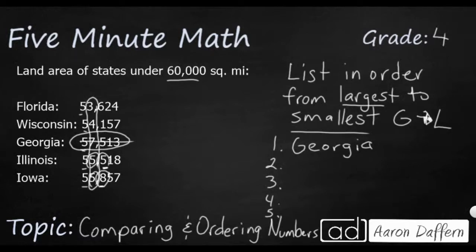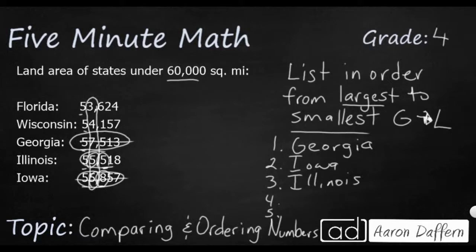So we're going to mark out Iowa and then place Illinois next on the list. Then all we need to do is find the next one, and the last one will be whichever is left. Wisconsin has a four in the thousands place, so Wisconsin comes next. And finally we end with Florida — that's the smallest of these five.